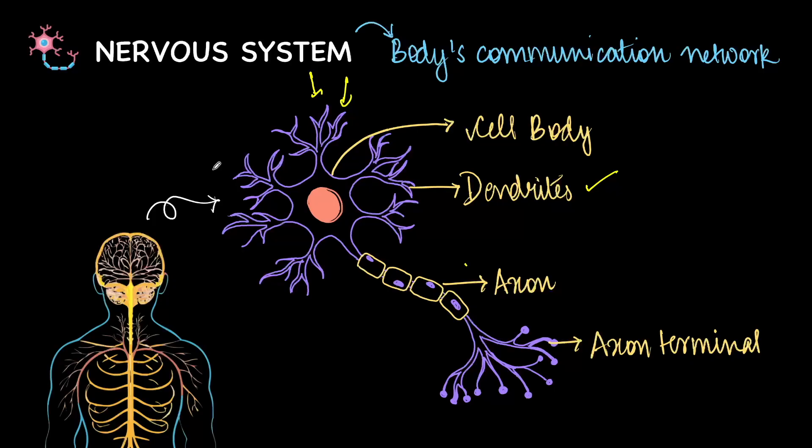And when the dendrites receive the message, it goes to the cell body. And from here it goes to this long fiber called the axon that carries the message forward.